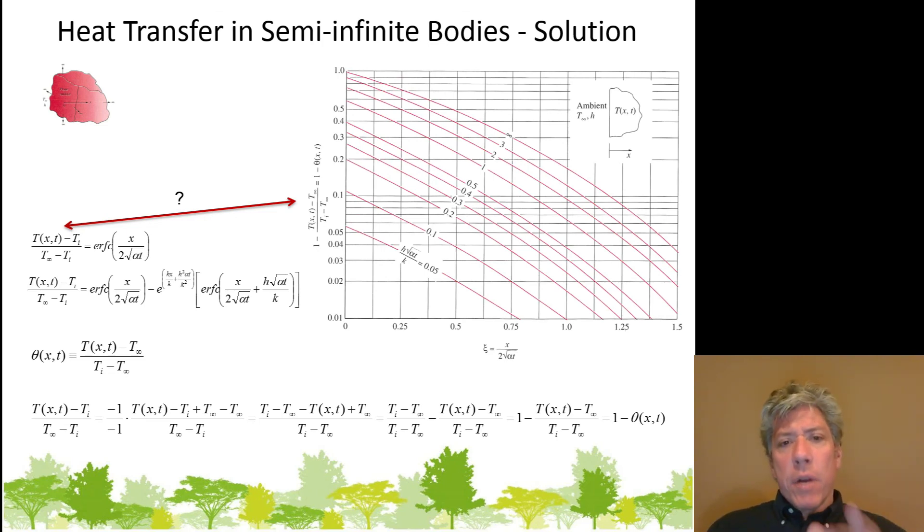And if I remember right, your author has even put it that way, where it's equal to one minus theta of x,t. So what this is giving us is not theta of x,t. It's one minus theta of x,t.